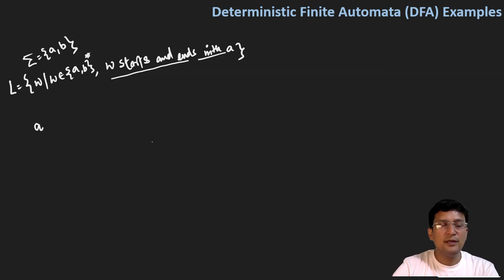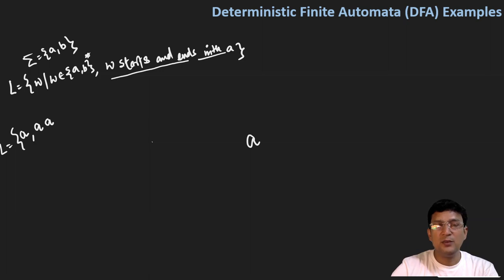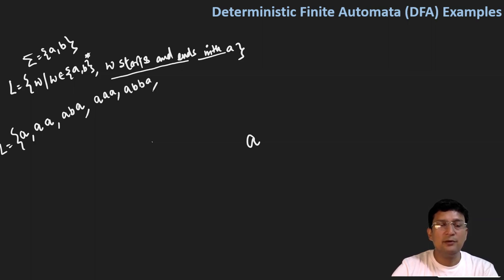So what are the strings that start with A and end with A? Obviously, 'a' will be part of that, because the single string 'a' starts with A and ends with A. If I take 'ABA', that should also be acceptable. 'AAA' will also be acceptable. 'ABBA' will also be acceptable. So this is the language set.